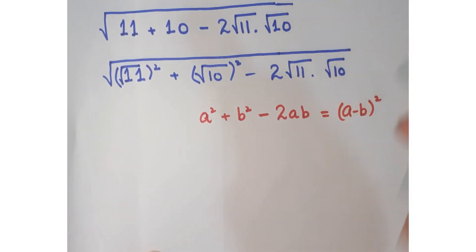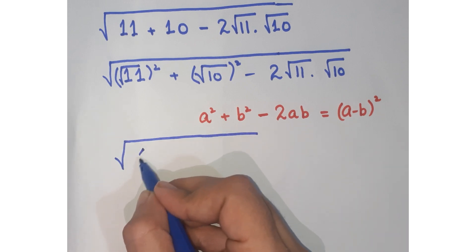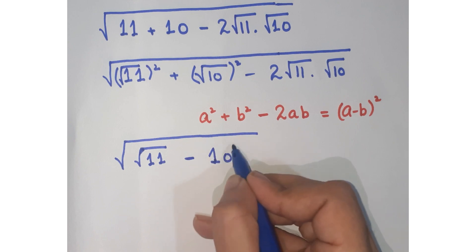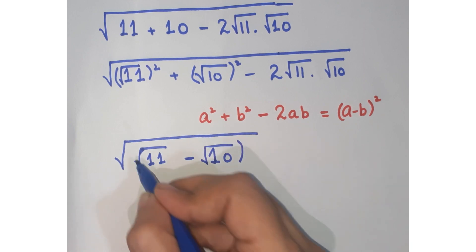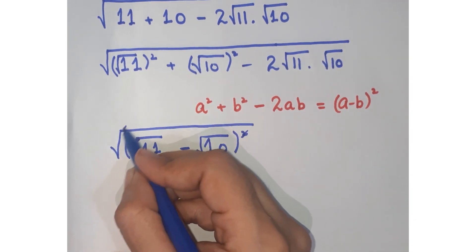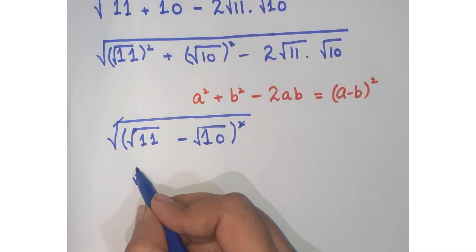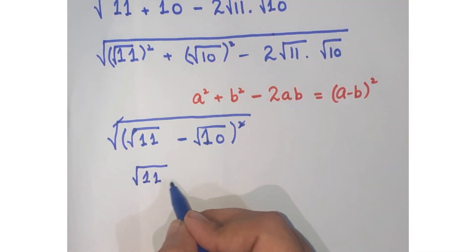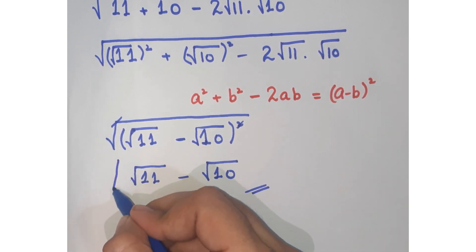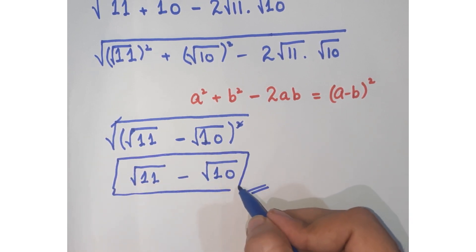You can write this as the square root of (√11 − √10) whole squared. Now this square and this square root cancel each other, so you get √11 − √10 as your final answer. I hope you understand the question — if you liked it, kindly subscribe to my channel.